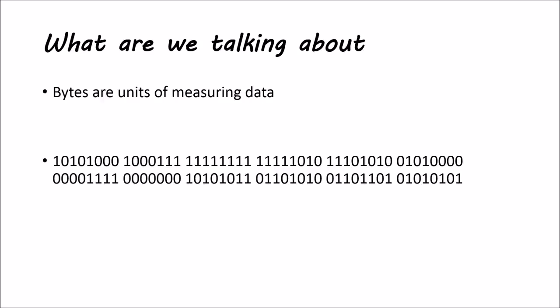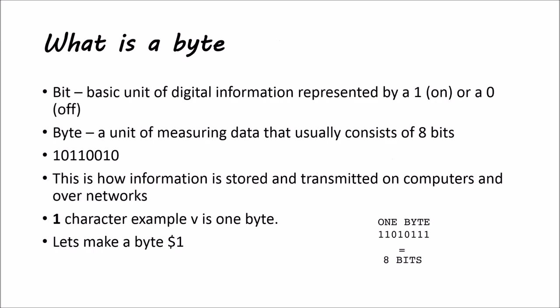So, what are we talking about? Bytes are a unit of measuring data. Before we get into what a byte is, we need to know what a bit is. A bit is a basic unit of digital information represented by a 1, which is the on mode, or a 0, which is off. I'm not really going to go into what the on and off is and what the 1s and 0s are about, but you just need to know that's how computers talk to each other.